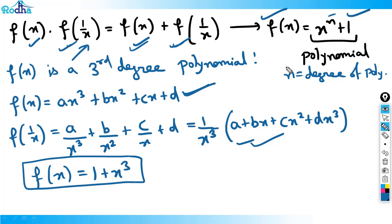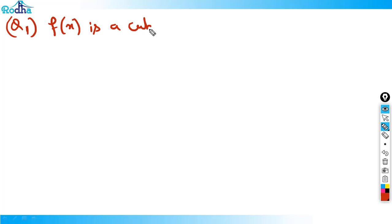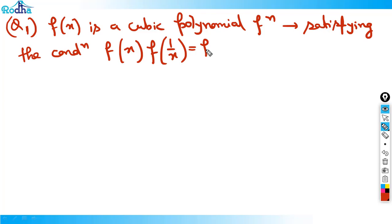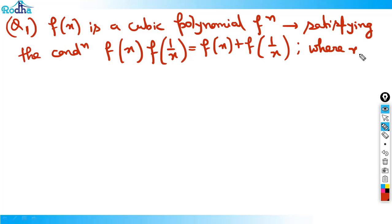Now let's do a question. f(x) is a cubic polynomial function satisfying the condition f(x)·f(1/x) = f(x) + f(1/x), where x ≠ 0, and f(4) = 65. We need to find the value of f(12).